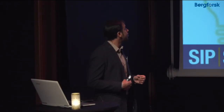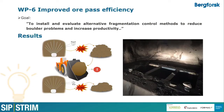Work package 6 is about improved overpass efficiency. It's about installing and evaluating some alternative fragmentation control methods to reduce the boulder problems — pieces which are bigger than one by one meter in size. In the blast hole reduction studies, we found that reducing the blast hole diameter reduces the boulders as well, but it's not that significant.